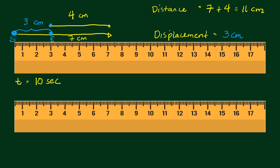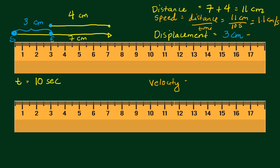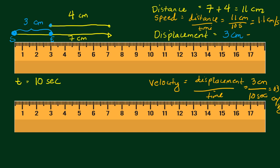What will now be our speed? Your speed is just distance over time. It's equal to 11 centimeters over 10 seconds, so 11 over 10 is 1.1 centimeters per second. Whereas for your velocity, velocity is equal to displacement over time. Since your displacement is 3 centimeters over a total time of 10 seconds, 3 divided by 10 equals 0.3 centimeters per second.